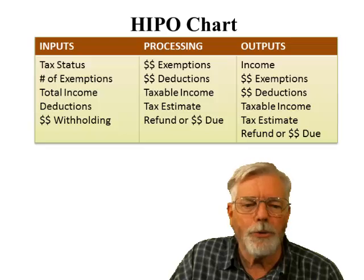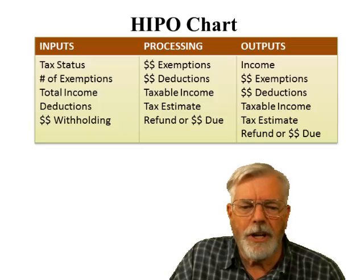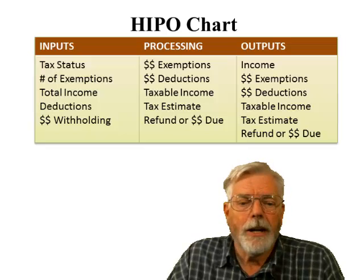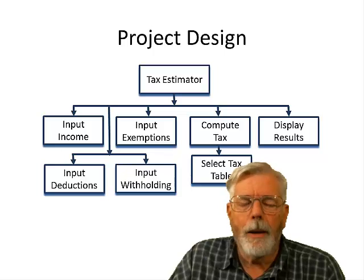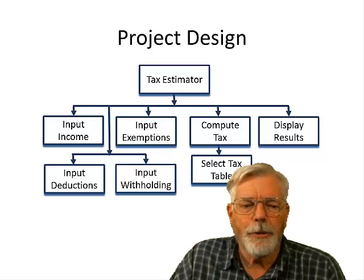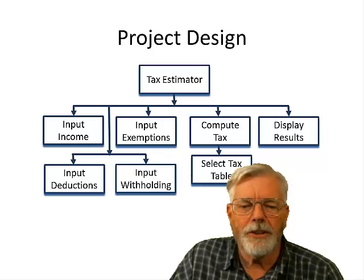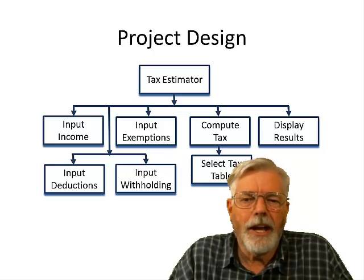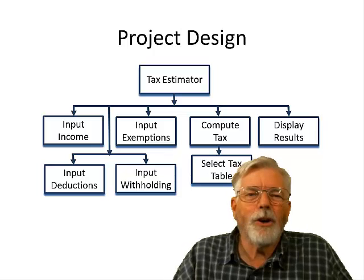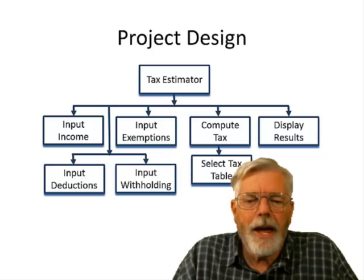Once we know the inputs and outputs, we can figure out the processing needed to get from input to output. We have to figure out the dollar amounts for exemptions and deductions, compute the taxable income, estimate the tax, and determine whether there is a refund or balance due. The program is broken into a tax estimator that calls several different functions to input income, exemptions, deductions, and withholding. A separate function selects the appropriate tax table and passes it back, then we display the results.